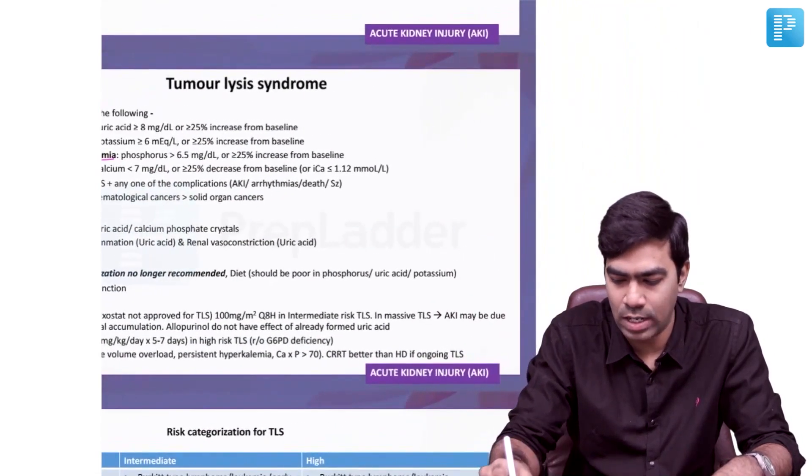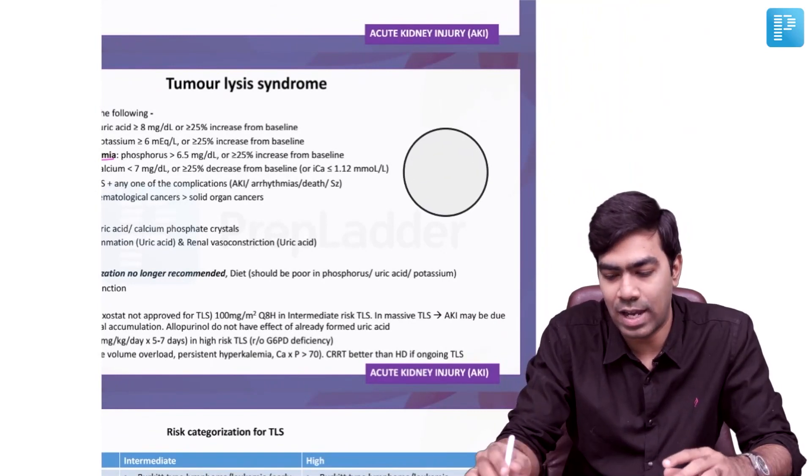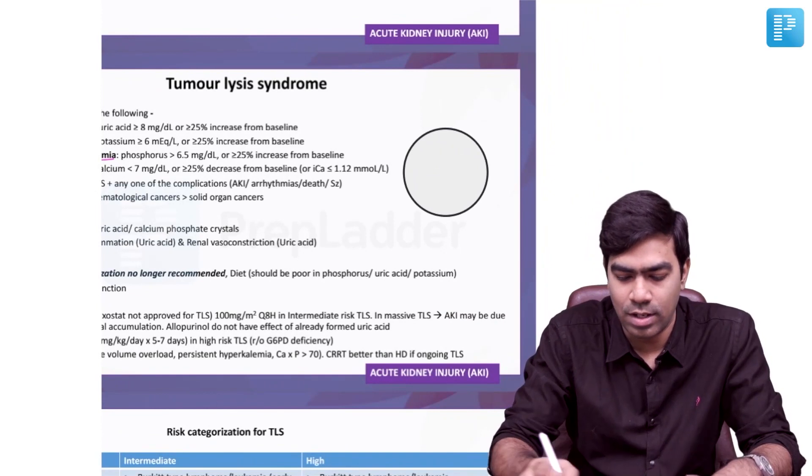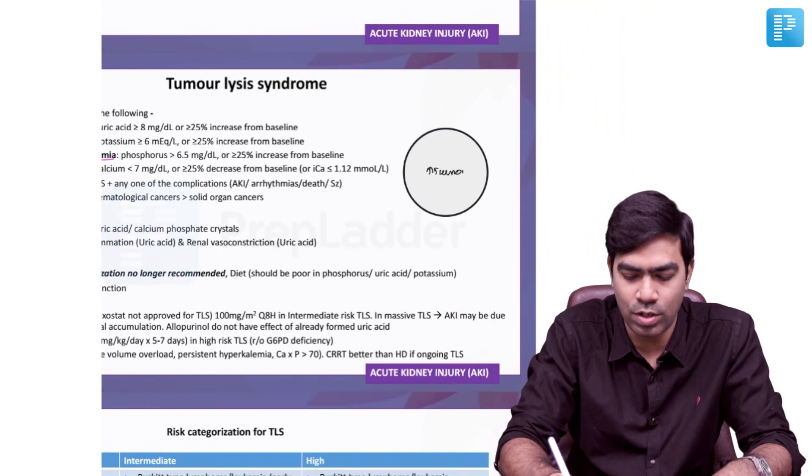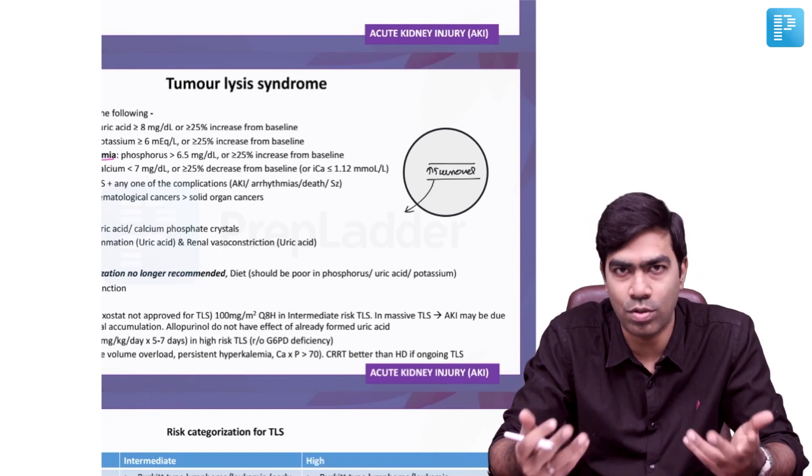First of all, why should patients with tumor lysis develop these classic electrolyte disturbances? We need to know that tumor cells have a very rapid turnover, which means they produce more DNA.